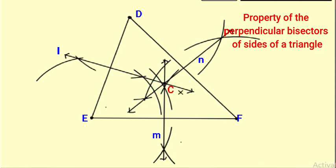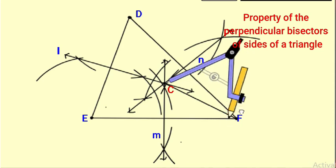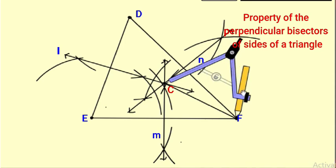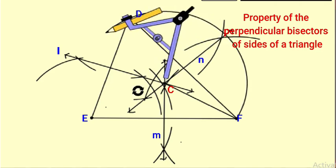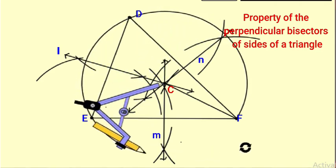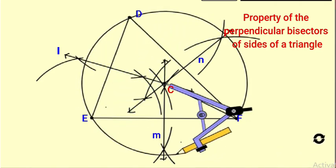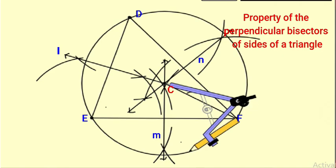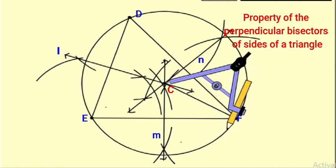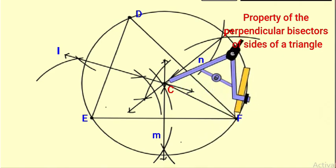Taking CD, CE, or CF as the radius, draw a circle passing through all the vertices of triangle DEF. C is called the circumcenter, as the circle is drawn around the triangle.